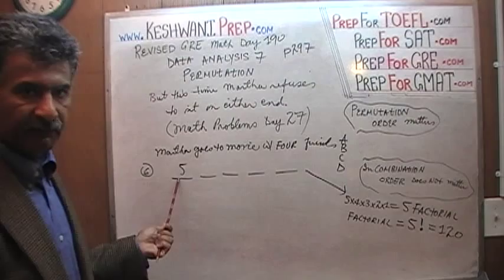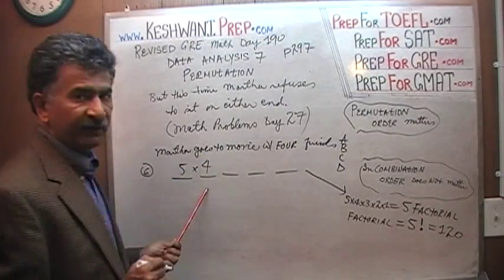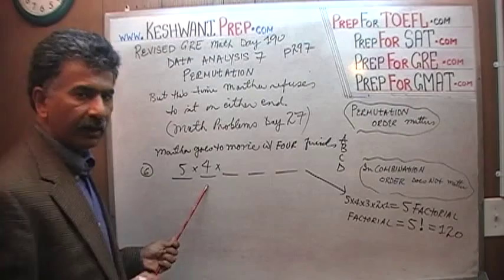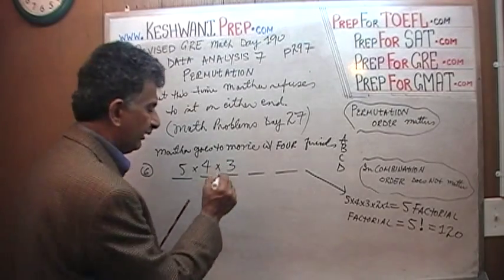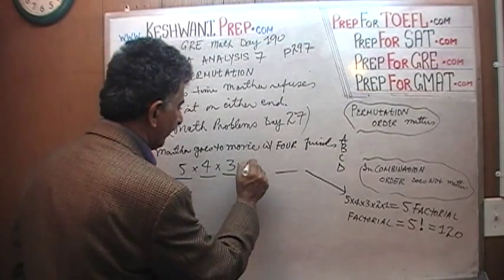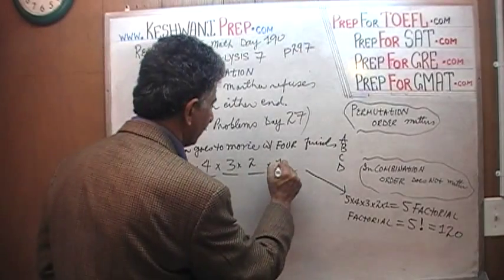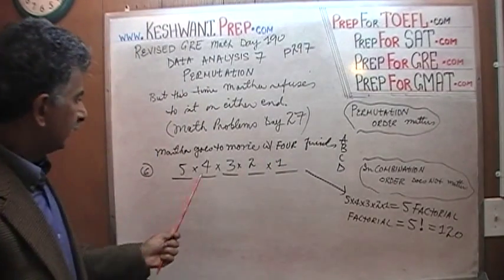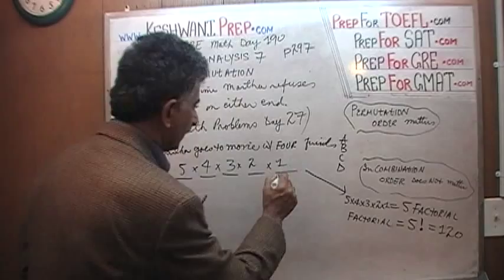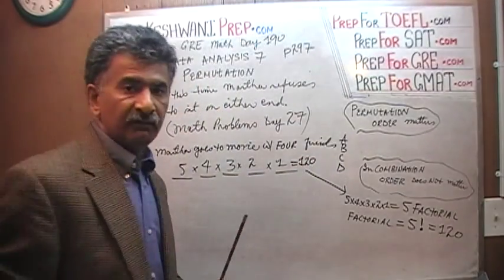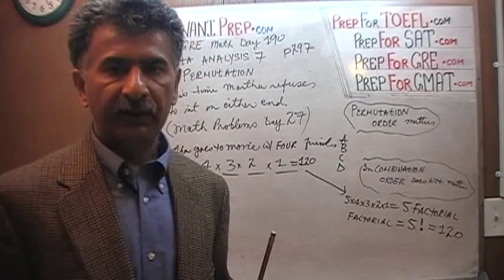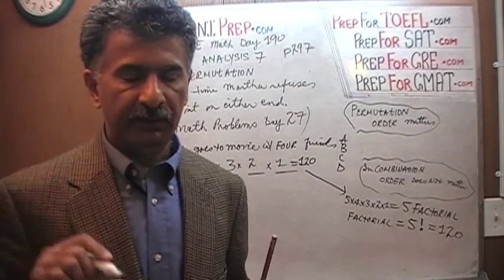Any one of those 5 people can sit here. Then in the second spot we have 4 choices to fill the second spot. There are 3 ways to fill the third spot. There were 2 ways to fill the second last spot. And finally whoever is left sits in the last spot. And that turns out to be 120 ways.